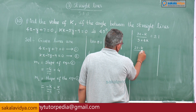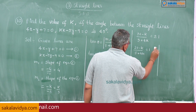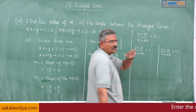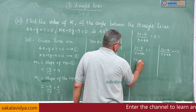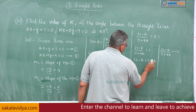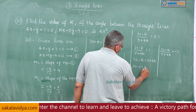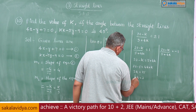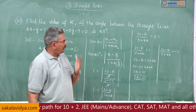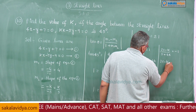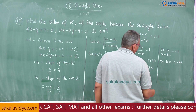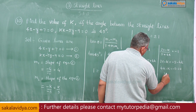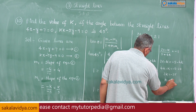Solving the modulus equation gives two cases. Case 1: 20 minus k equals 5 plus 4k, so 20 minus 5 equals 4k plus k, giving 5k equals 15, therefore k equals 3. Case 2: 20 minus k equals minus 5 minus 4k, so 4k minus k equals minus 5 minus 20, giving 3k equals minus 25, therefore k equals minus 25 over 3.